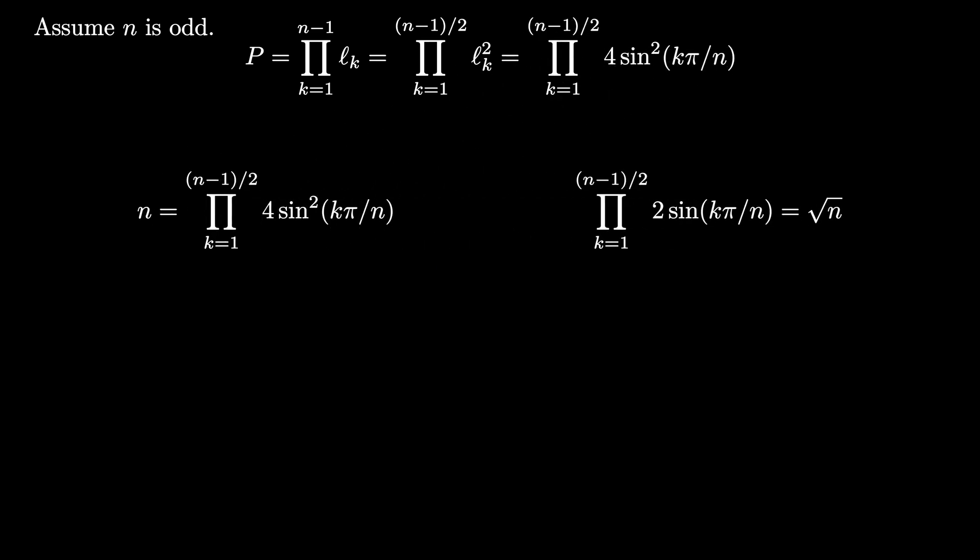Once we take square roots, we see that the product as k ranges from 1 to (n-1)/2 of the quantity 2sin(kπ/n) is equal to √n.